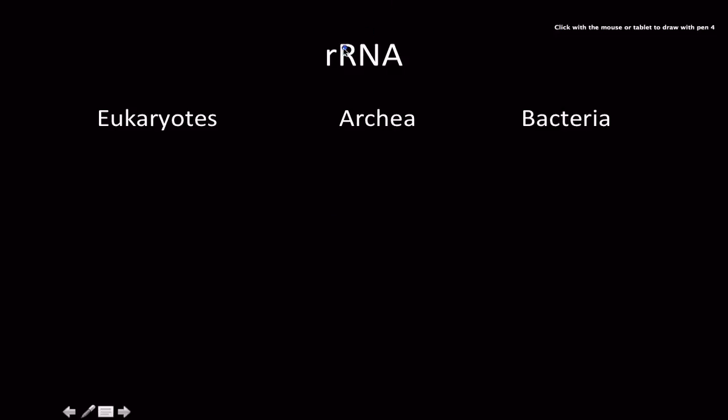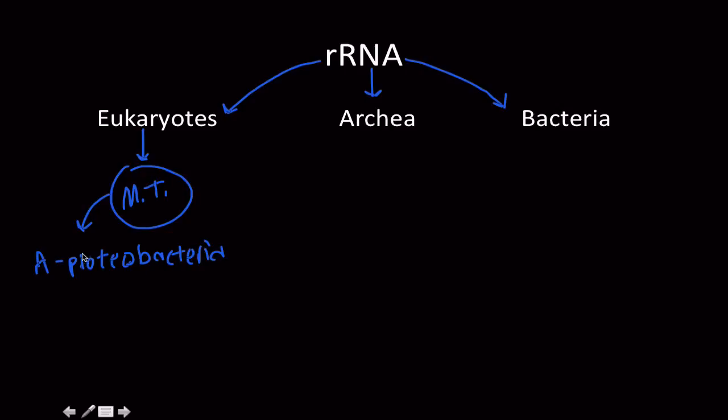The ribosomal RNA is what separates eukaryotes, archaea, and bacteria. All drastically separates us. So even in eukaryotes, in you and me, there's mitochondria. Where did these mitochondria come from? Well, their ribosomal RNA tells us that they came from alpha-proteobacteria.